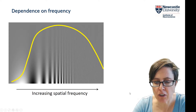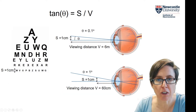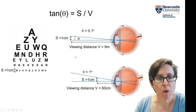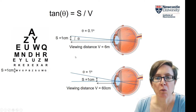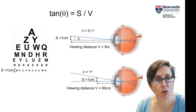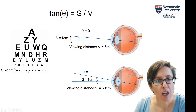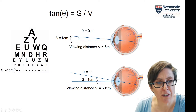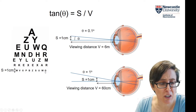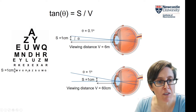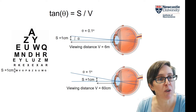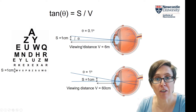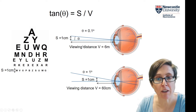Spatial frequency is measured in cycles per degree. Why degrees? Well, in vision, what's relevant is visual angle always. When you go to the optician and they measure the smallest letters that you can see, it's not very relevant to say, can this person read letters that are one centimetre tall?